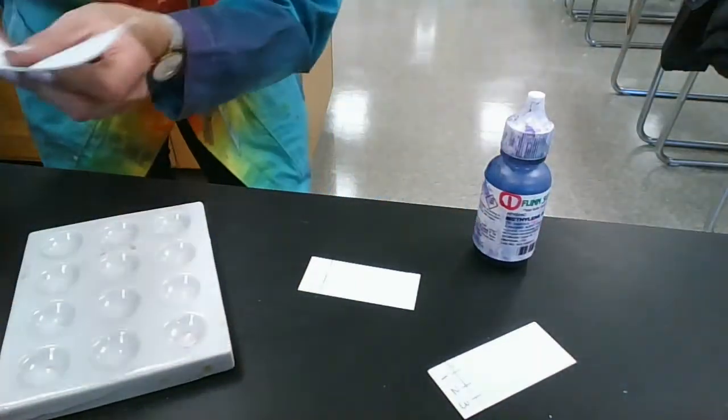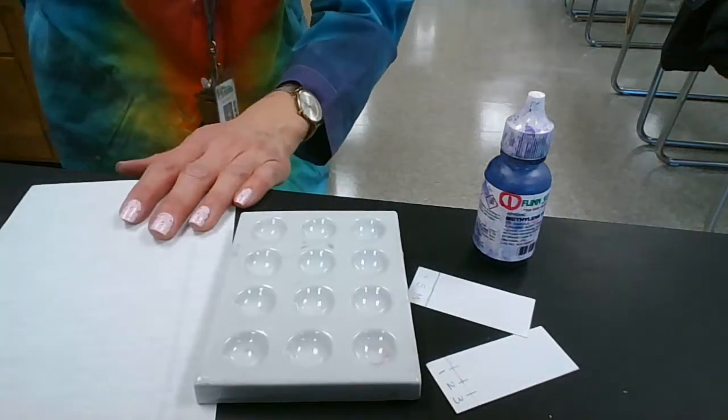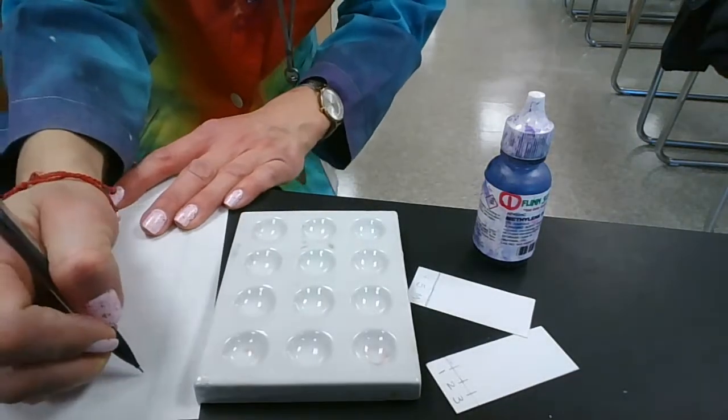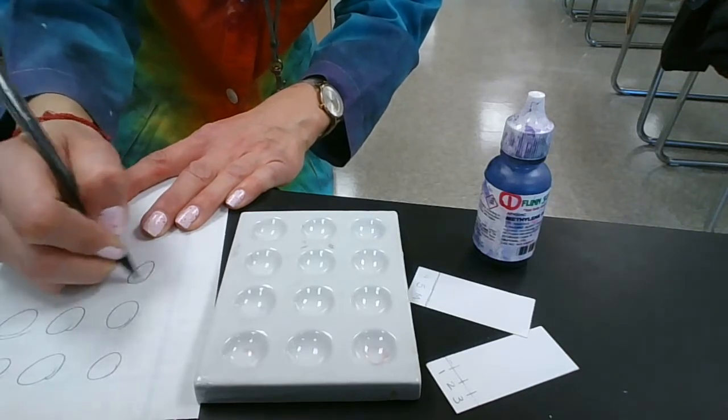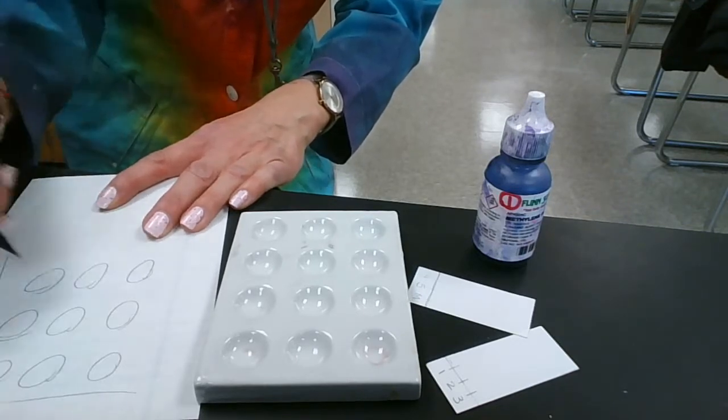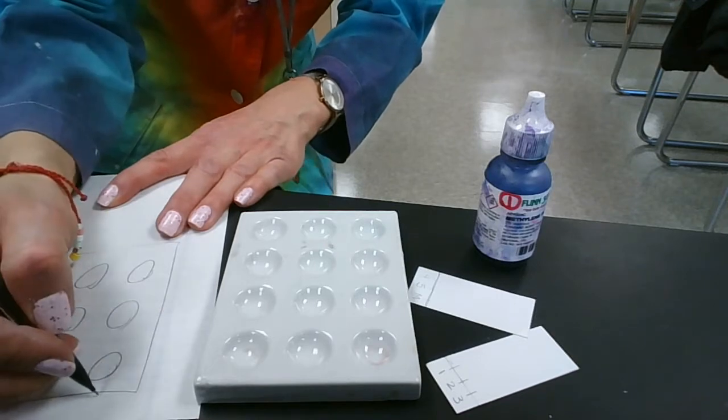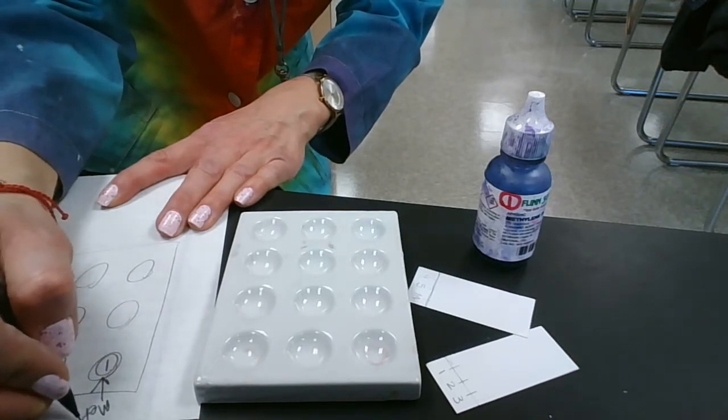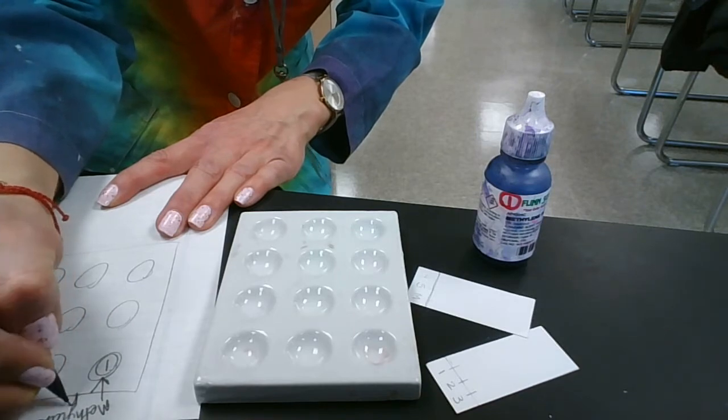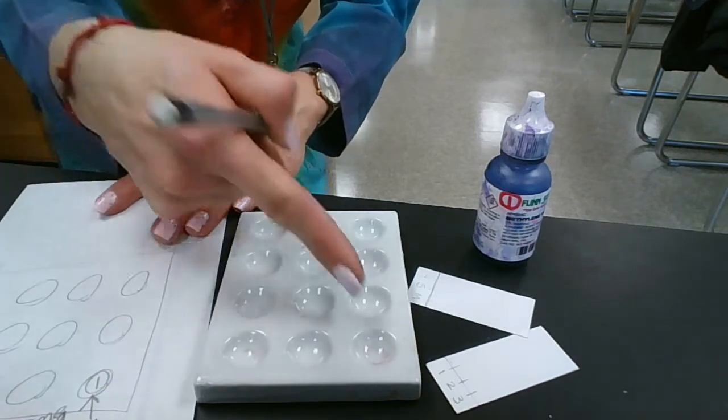Now when you get a plate, get some paper and keep track of what dye you're using. So if this is my plate, I want to keep track of where I put methylene blue. I'm going to have to say, okay, this is dye number one and this is methylene blue, so I know what I've got on my plate.